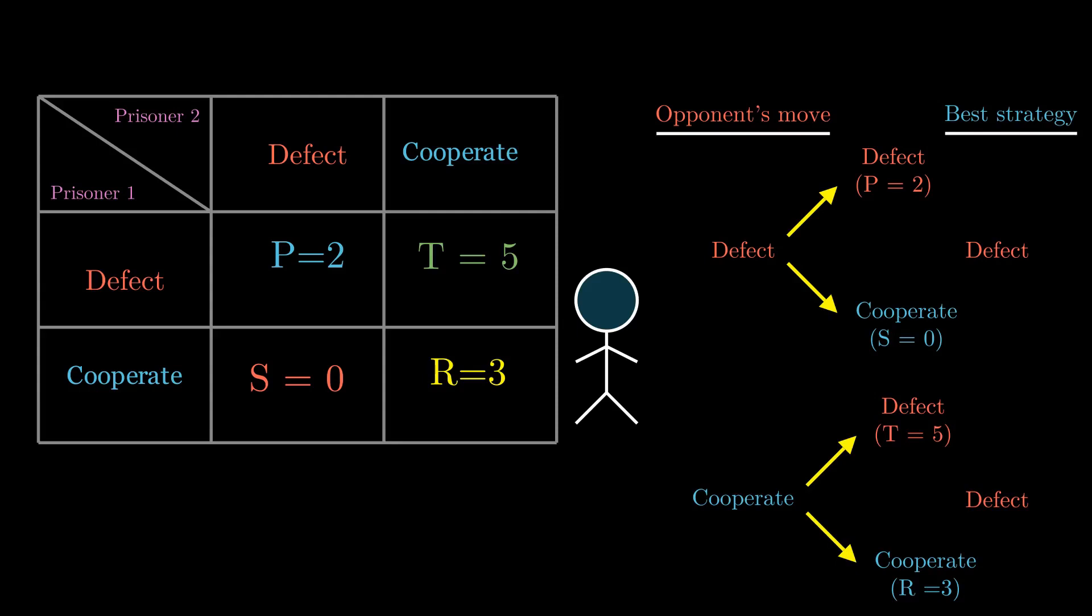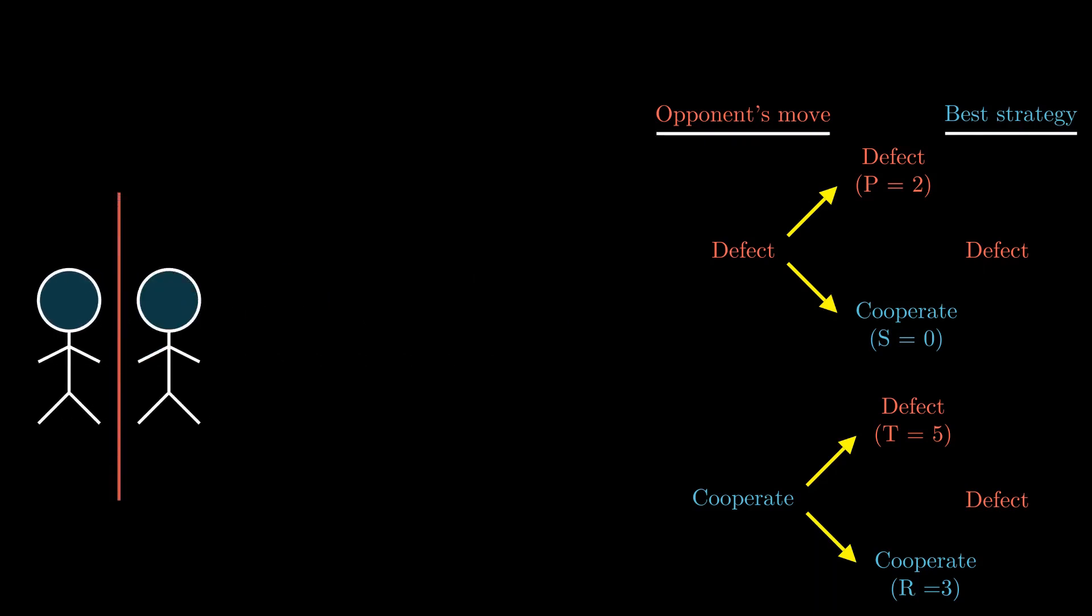So seems like defecting is his best strategy. And it is the best strategy of the next prisoner as well, assuming that both of them are capable of reasoning. So even though through a group's perspective, cooperating seems to be the best strategy because it amasses the duo six points, but through an individual lens, defecting is the best strategy for both of them. It is called the dominant strategy or the equilibrium.